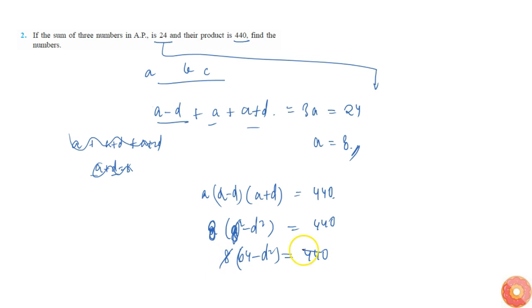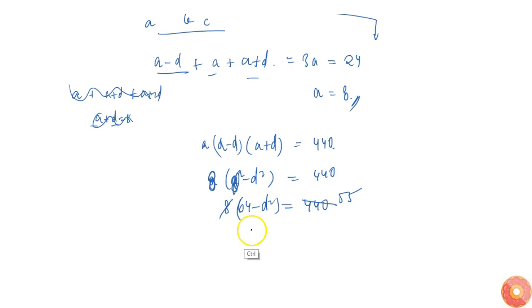If I cancel it, it becomes 55. So 64 minus 55 is equal to d squared. From this, d squared is equal to 9.